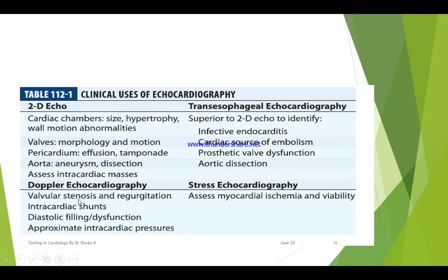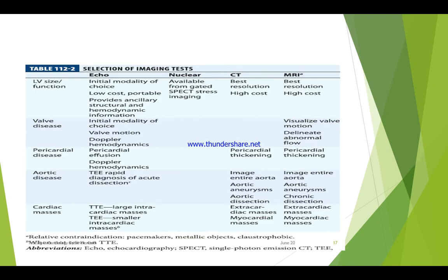Doppler echocardiography is used for valvular stenosis and regurgitation, intracardiac shunts, diastolic filling or dysfunction, and to approximate intracardiac pressure. Stress echocardiography is used to assess myocardial ischemia and viability of the cardiac muscle. These are some of the main uses of echocardiography in cardiac disease.